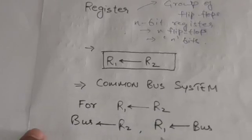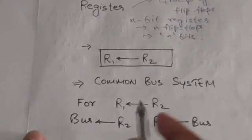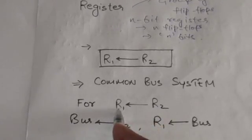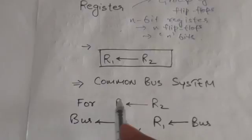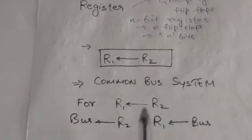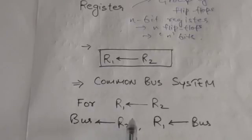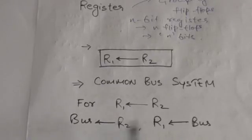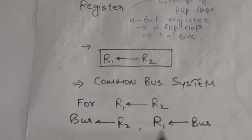The efficient way of transferring information between registers is the common bus system. To transfer the content of register R2 into register R1 using a common bus system, we first transfer the content of register R2 onto the bus, and from the bus that content is transferred into register R1.